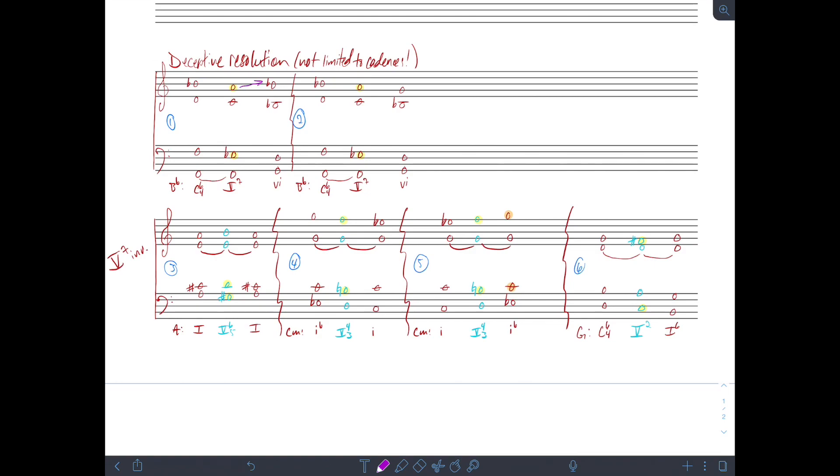The leading tone resolves up. It forms that tritone, remember from our earlier discussion of 5-7s, which then resolves in contrary motion. The second scale degree resolves down to the first scale degree. So the only real difference from going to 1 that we have is the bass, which now resolves up to the sixth scale degree rather than to the first scale degree, and that's where you get that deceptive motion. So that's the simplest, most straightforward example of a deceptive resolution.